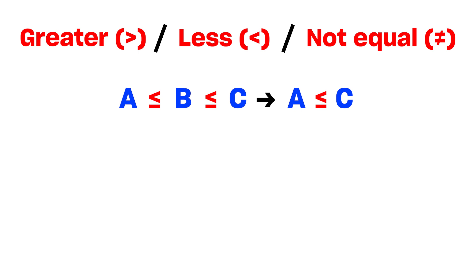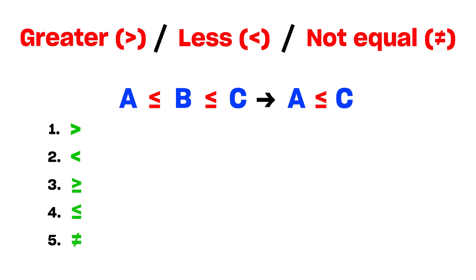In inequality you will be having five symbols: one is greater than, one is less than, one is greater than or equal, fourth one is less than or equal, and fifth one is equal. Only based on these five symbols you will be answering the greater than or lesser than.